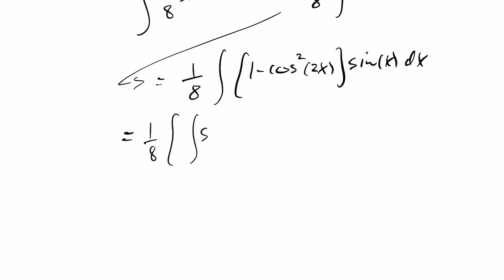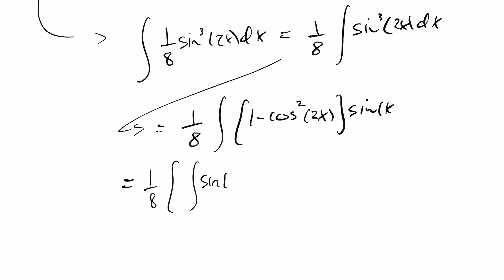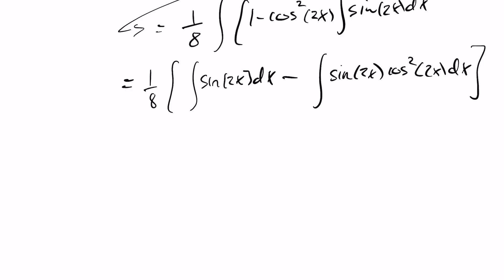This is 1 eighth. This will be the integral of sine of, this should have been, sorry, one little mistake there. That should have been a 2x dx. So this will be the integral of sine of 2x dx minus the integral of sine of 2x cos squared of 2x dx. That whole thing multiplied by 1 eighth.